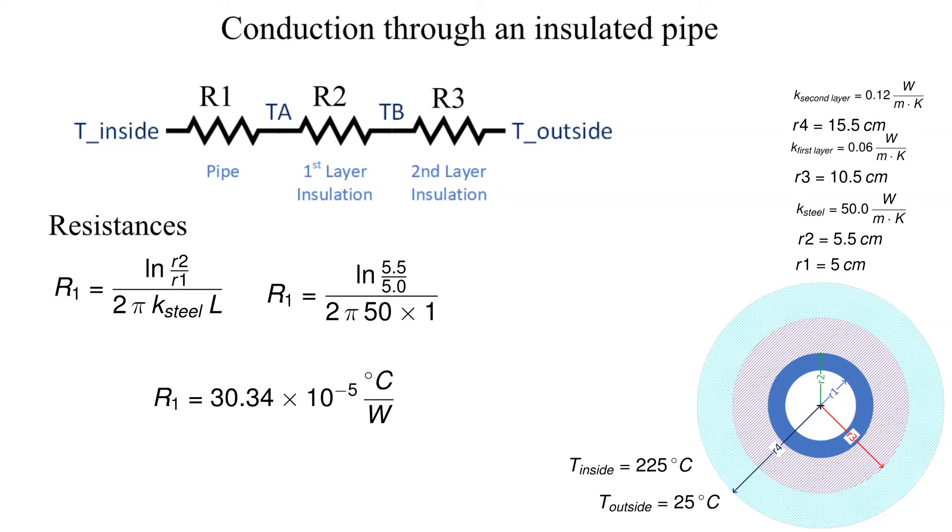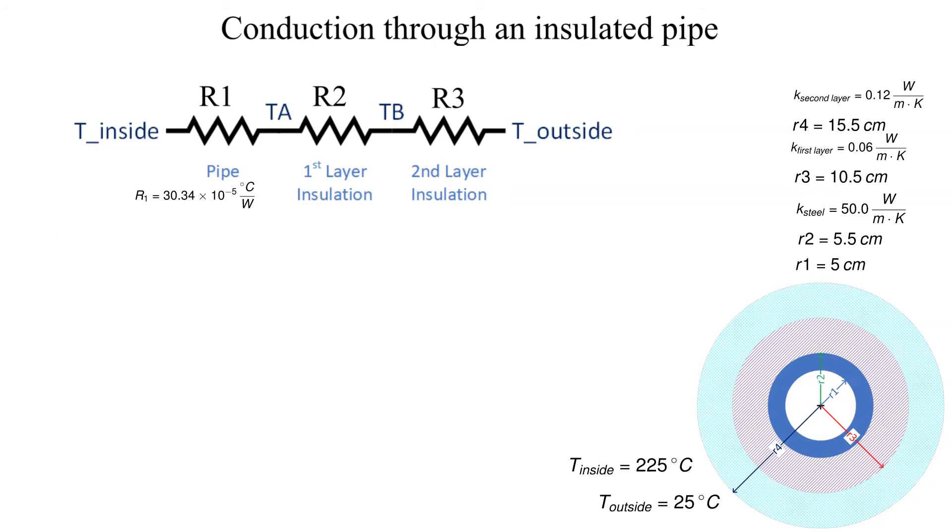Now let's do the same for the first layer of insulation denoted as R2. Note that it is many orders of magnitude greater than the resistance from the steel pipe.